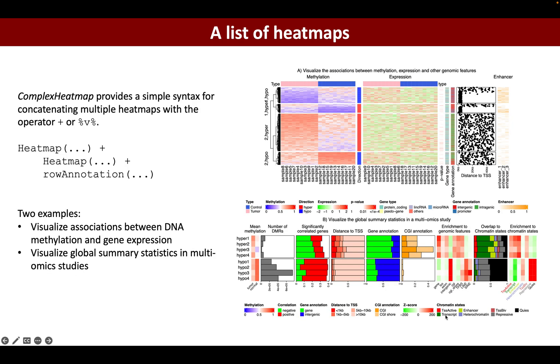You can add an arbitrary number of heatmaps and annotations either horizontally or vertically to construct complex heatmap visualizations. You can simply use the operator plus to horizontally link heatmaps or use %v% to vertically link the heatmaps.